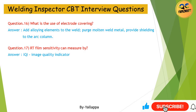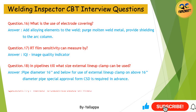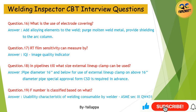Question 18: In pipelines, up to what size can an external line-up clamp be used? Answer: Pipe diameter 16 inches and below. For pipe above 16-inch diameter, special approval from CSD is required in advance. Question 19: F-number is classified based on what? Answer: Usability characteristics of welding consumable by the welder — ASME SEC 9, QW-431.